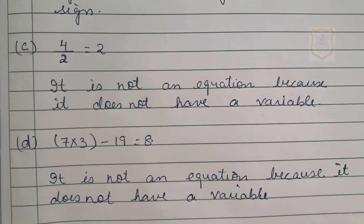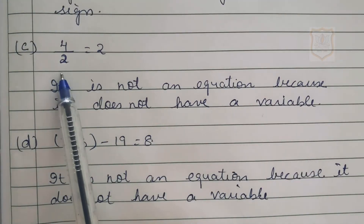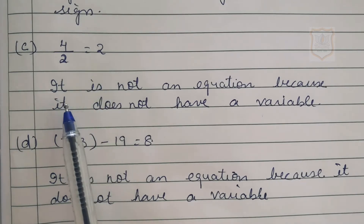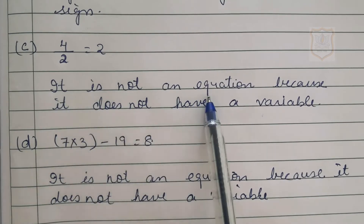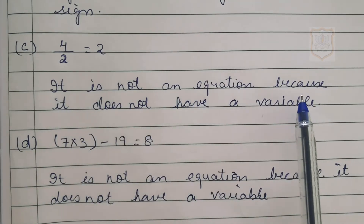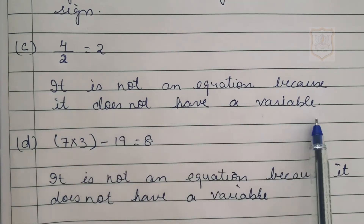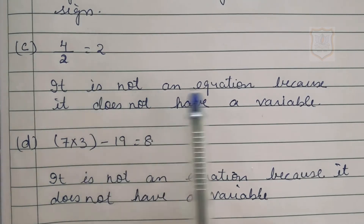Third part of question number 1: 4 upon 2 equals 2. We have to state whether this is an equation or not. It is not an equation because it does not have a variable. The expression doesn't carry any variable, so it is not an equation.